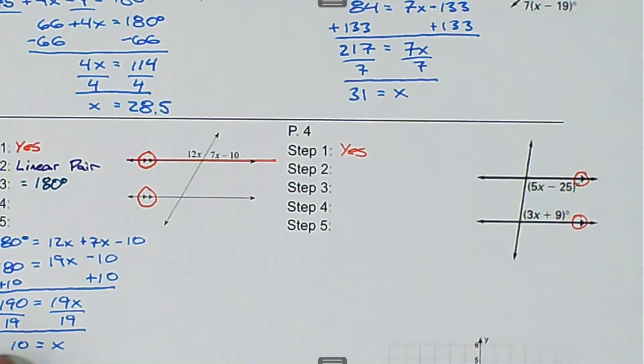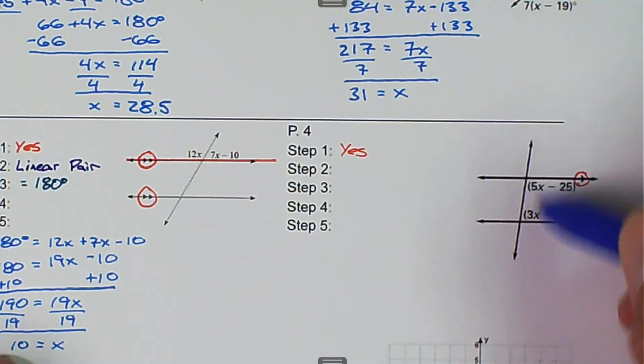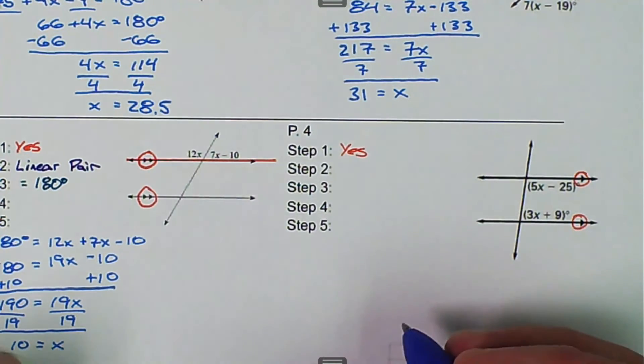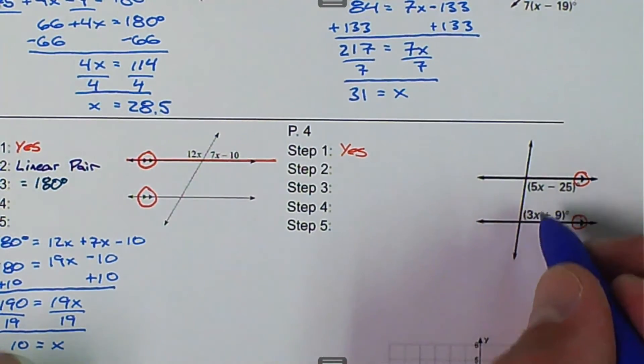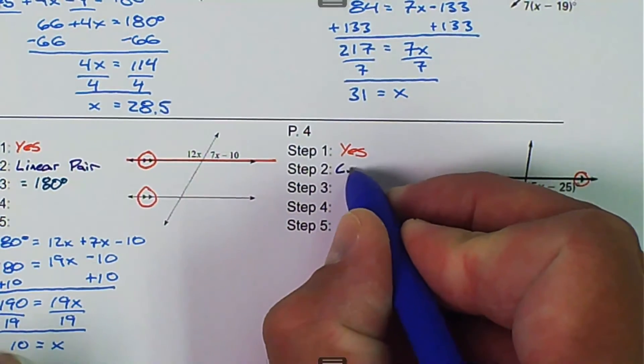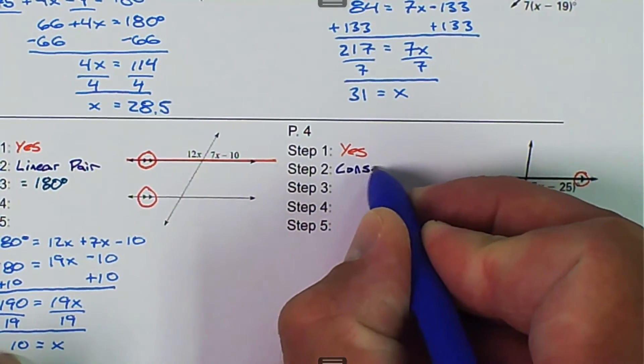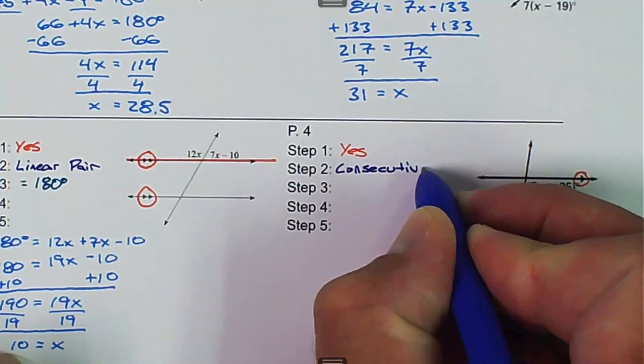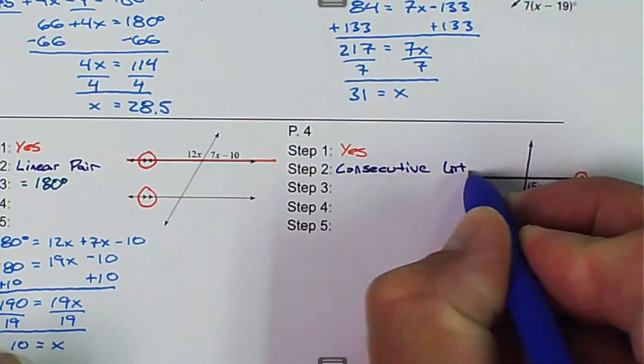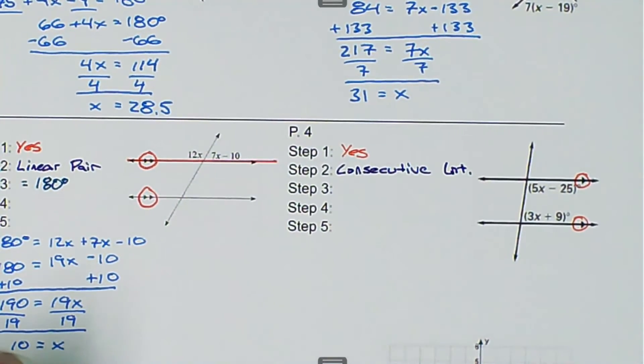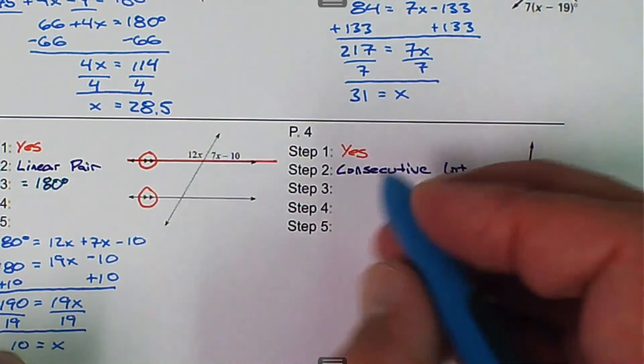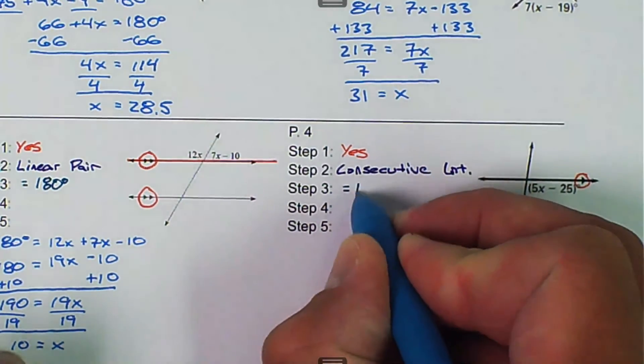Next, we want to decide what the relationship is. And so these are both interior, and they are on the same side of the transversal. So these are going to be consecutive interior. And consecutive interior, these two angles, they're going to add up to 180 degrees.